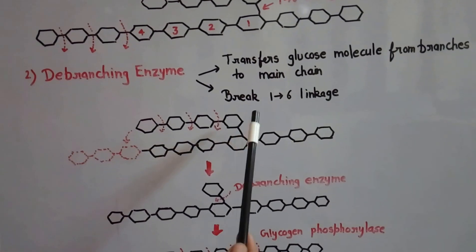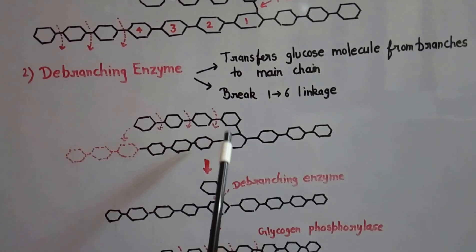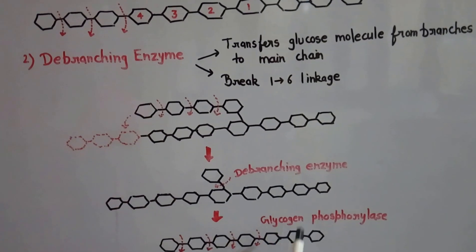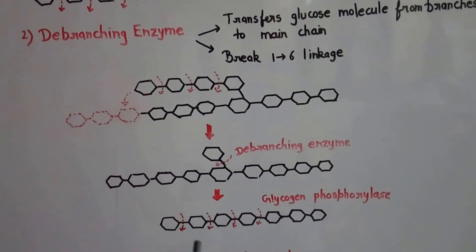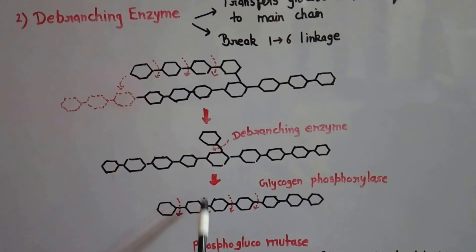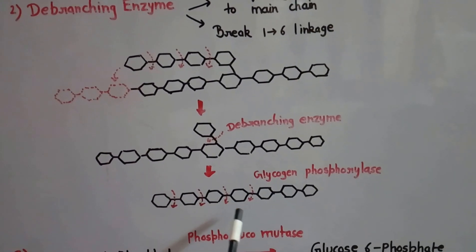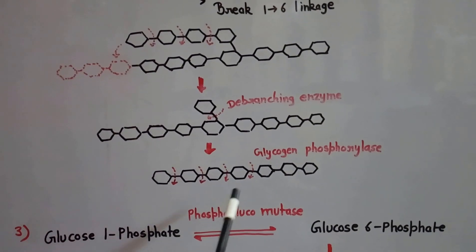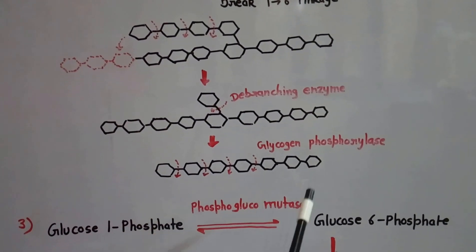Now, this enzyme breaks down the 1,6 glycosidic linkage. So now the action of glycogen phosphorylase takes place and the 1,4 glycosidic linkages are again broken down. The repeated action of these two enzymes breaks down completely the glycogen polymer.